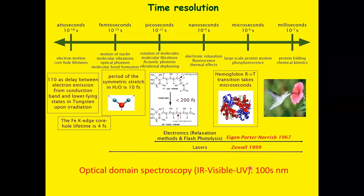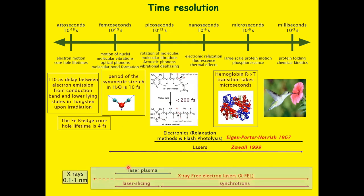However, all these efforts were done using optical domain spectroscopy, IR visible ultraviolet, which operates in the hundreds of nanometre wavelengths. And of course, with such wavelengths, you cannot get structure. If one wants to observe in real-time inter-atomic motion, then you have to bring together the femtosecond resolution of lasers with the high spatial resolution of X-rays, typically 0.1 to 1 nanometre.